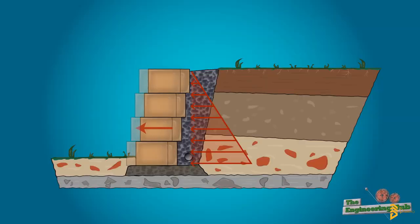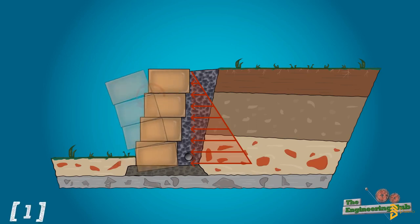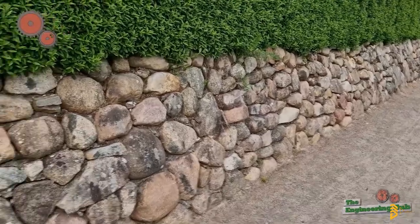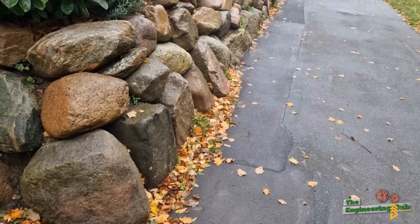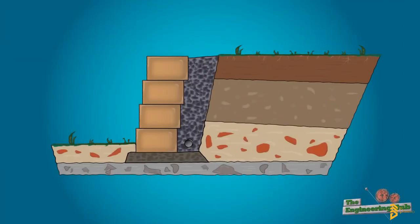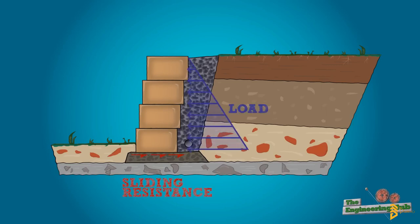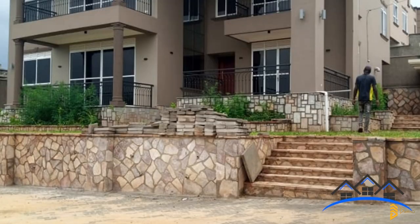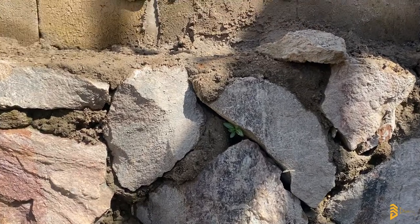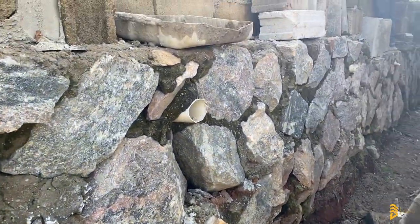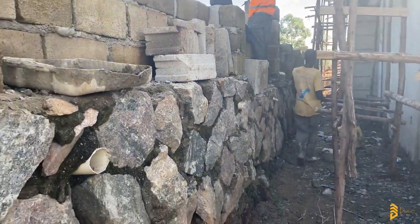In waterlogged areas — basically swamps — the soils tend to be expansive: they expand, contract, and have a tendency to sink. When you use a plinth wall made of rocks, you get a firmer, wider base — almost about two times as wide as the base created by clay bricks. This wider base reduces the chances of the building sinking or settling into the soil. Rocks are also very good at preventing capillary rise of water through the plinth walls to the superstructure, which can later cause peeling of paint and walls.